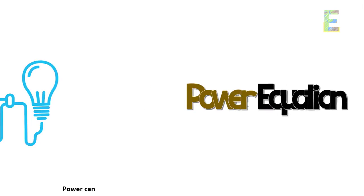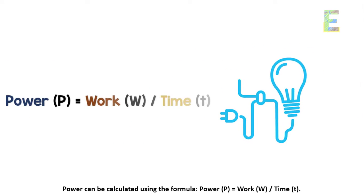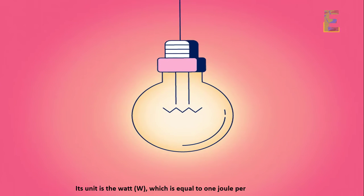Power equation. Power can be calculated using the formula: power P equals work W slash time T. Its unit is the watt (W), which is equal to 1 joule per second (J/S).